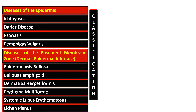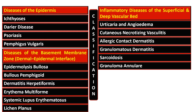Then there are diseases that are limited to the basement membrane zone, and these include epidermolysis bullosa, bullous pemphigoid, dermatitis herpetiformis, erythema multiforme, systemic lupus erythematosus, and lichen planus. This classification is on the basis of the site of the skin that is involved.